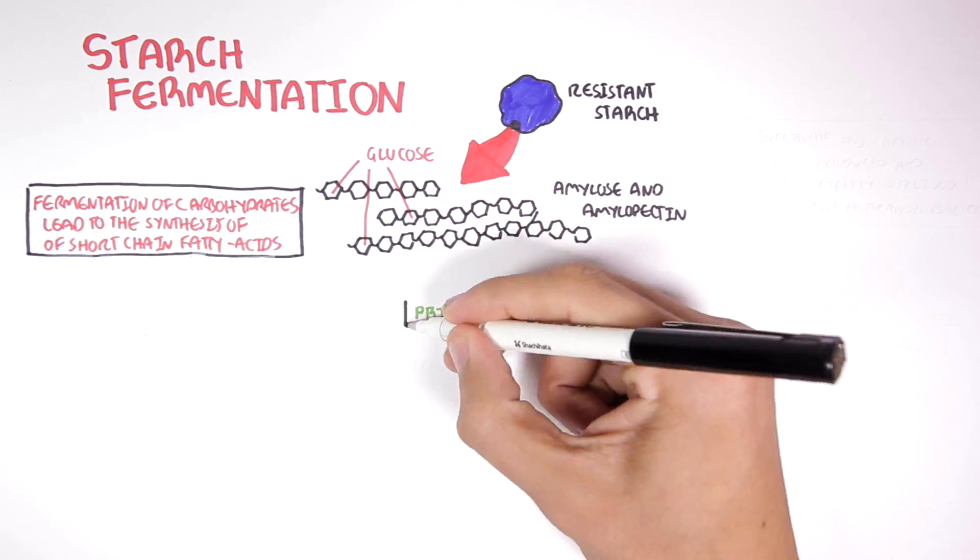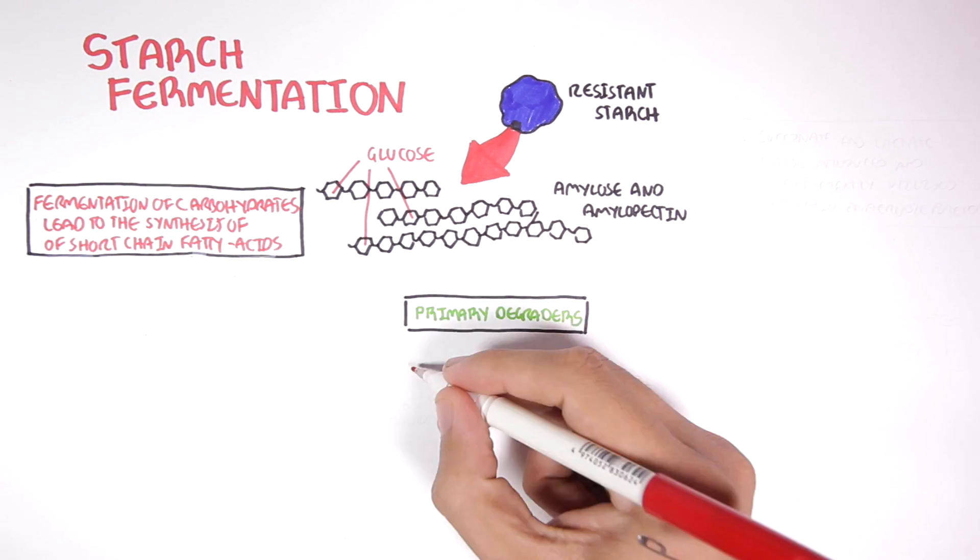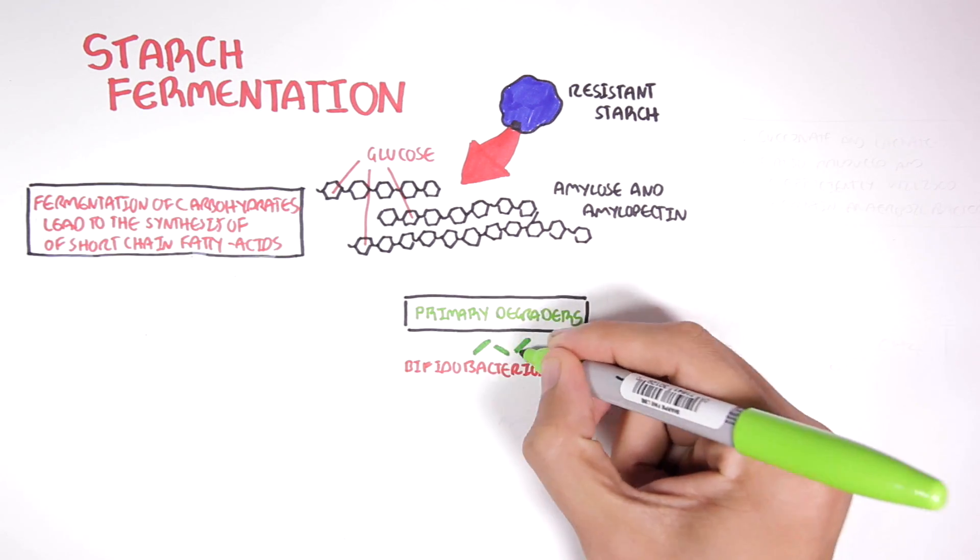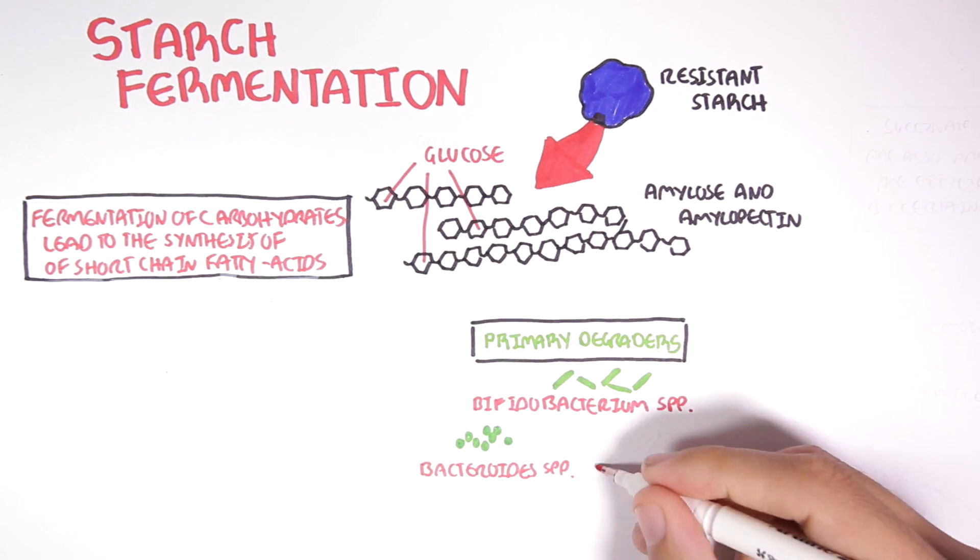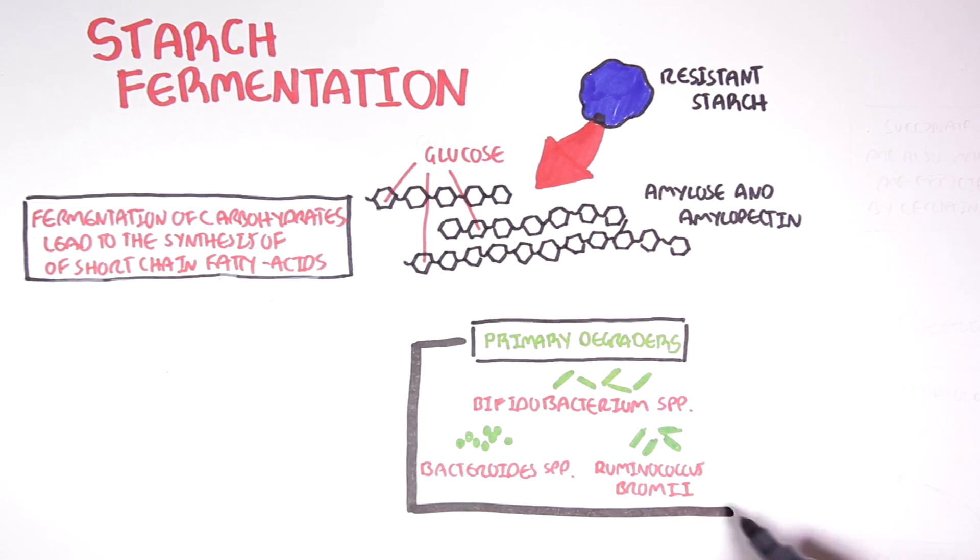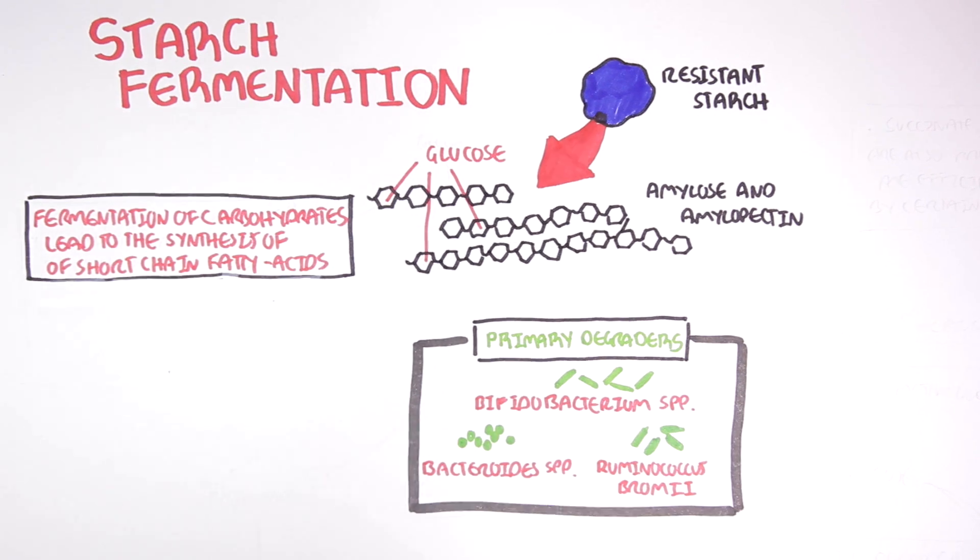Now within the colon, you have primary degraders of resistant starch, such as bifidobacterium species, bacteroides species, and ruminococcus bromii. The primary degraders have enzymes that are important in breaking down resistant starch and fermenting it.